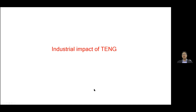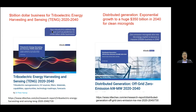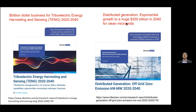Looking forward to the potential impact of TNG: since it was invented by us in 2012, a company called Editech has published hundreds of pages of market research projecting billions of dollars of TNG business for energy harvesting and sensing between 2020 and 2040. TNG can contribute to distributed energy generation — up to 2040 the market for distributed energy could be 350 billion dollars, including wind, solar, and other technologies. If TNG can have even a small share, that would be very significant.